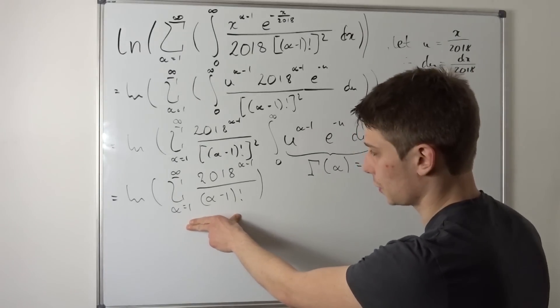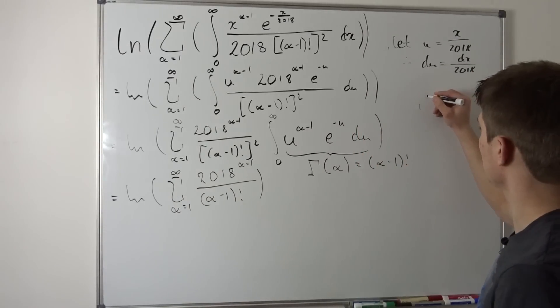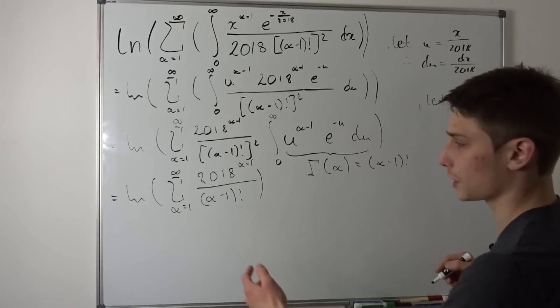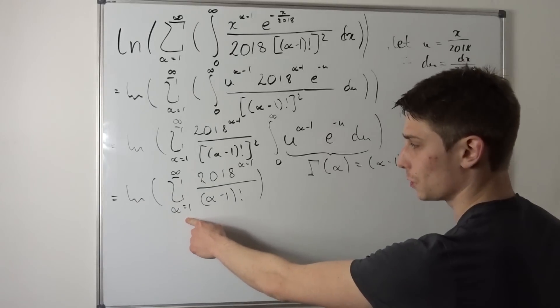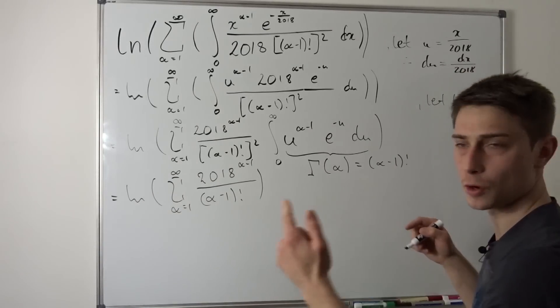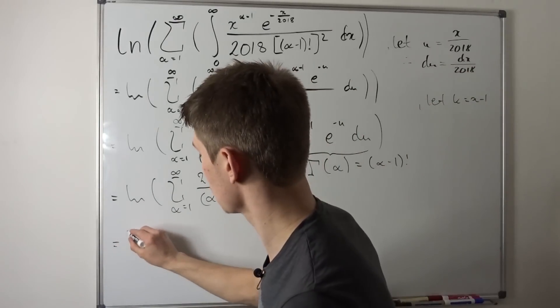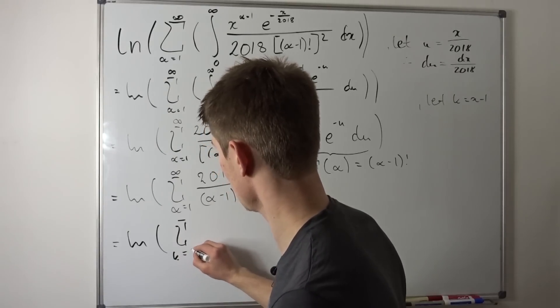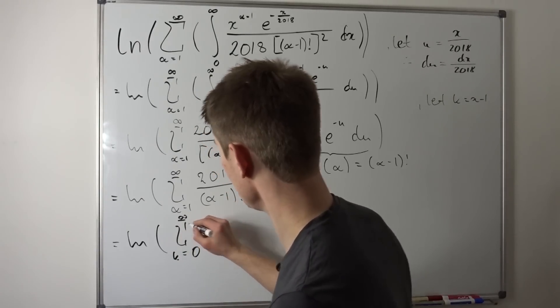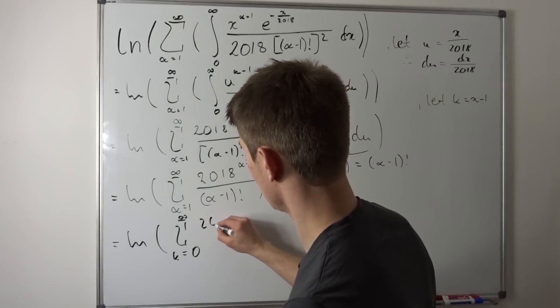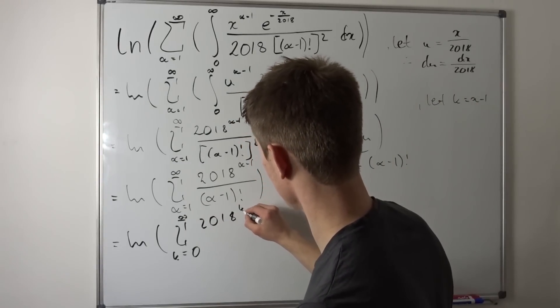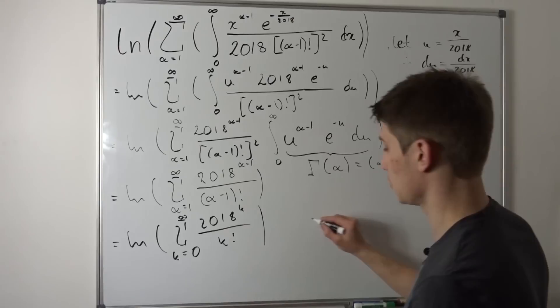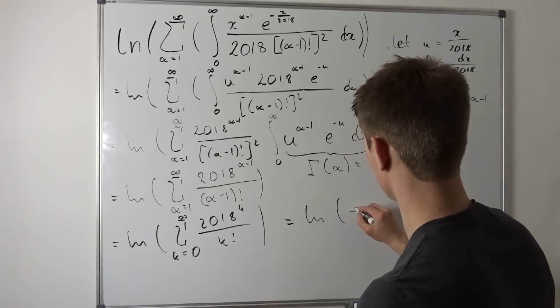So for example, if we let k equal alpha minus 1 it will become clear. So the index will run from, if we plug in 1 into here, from k equals 0. So that's natural log of the sum from k equals 0 to infinity, and then 2018 to the k power over k factorial.